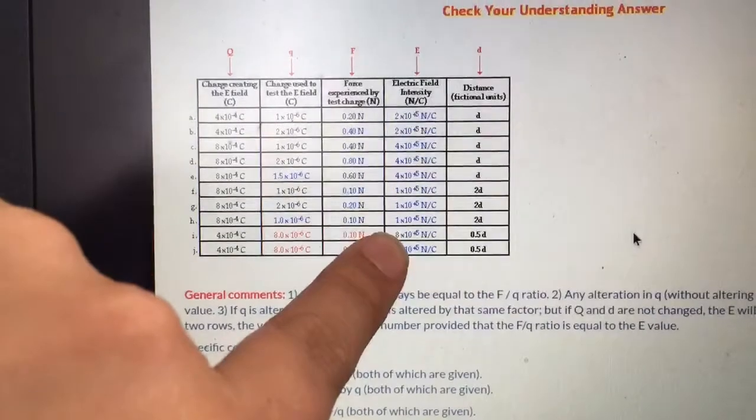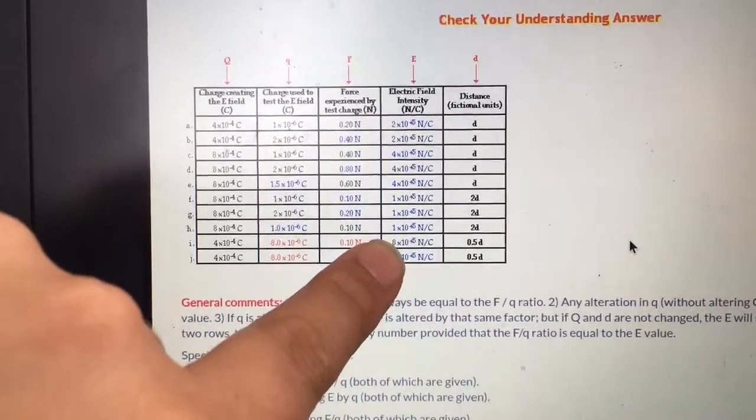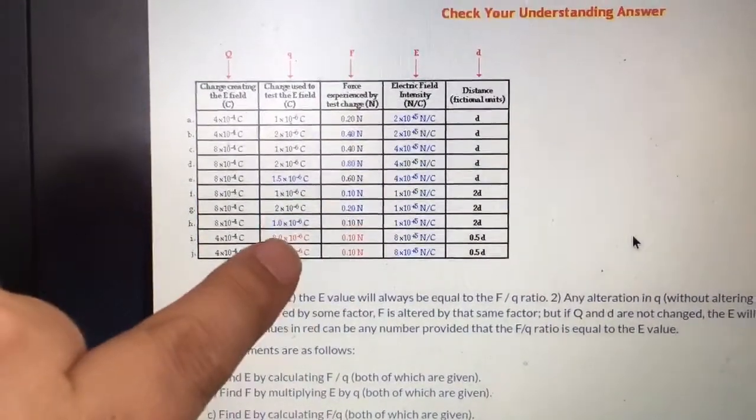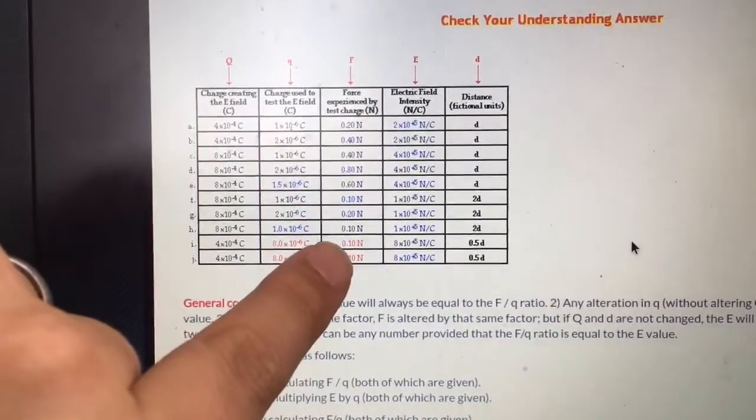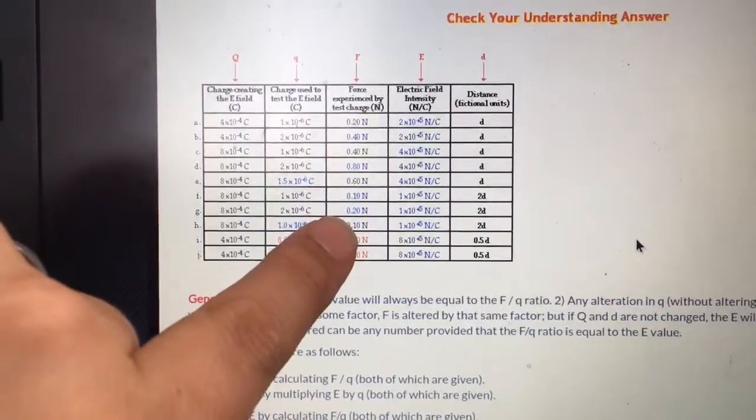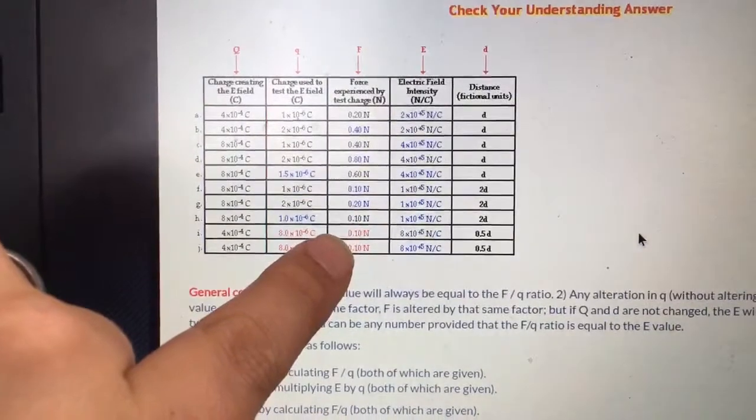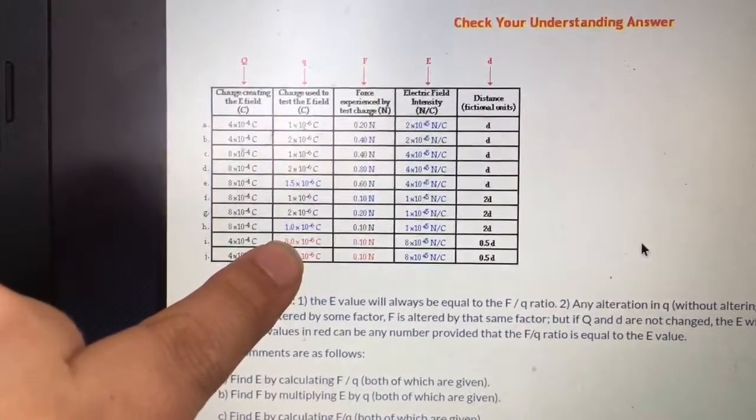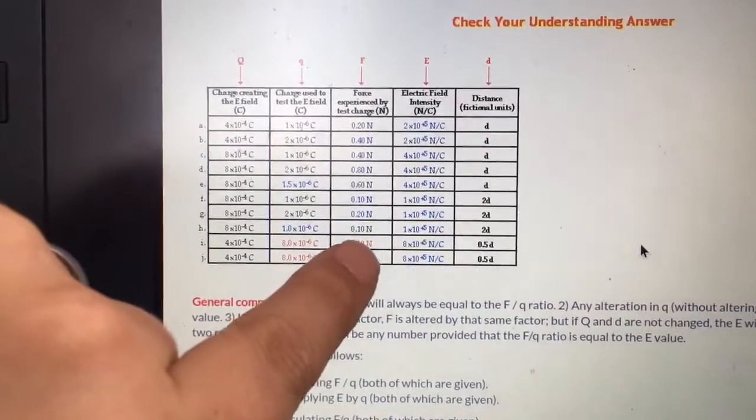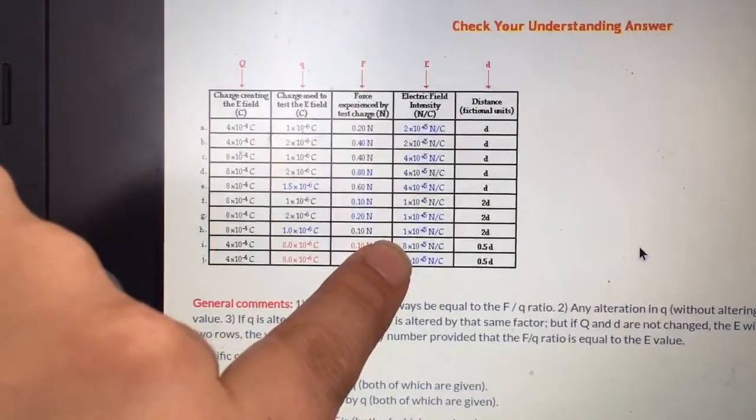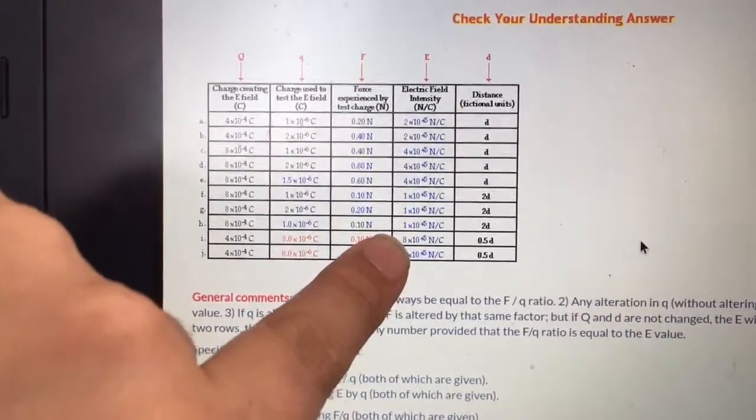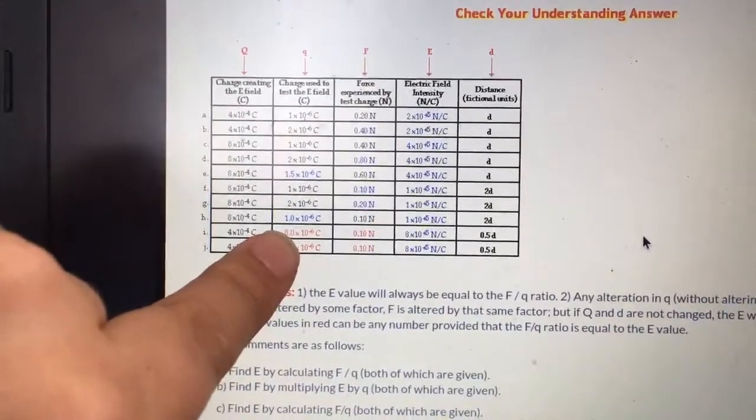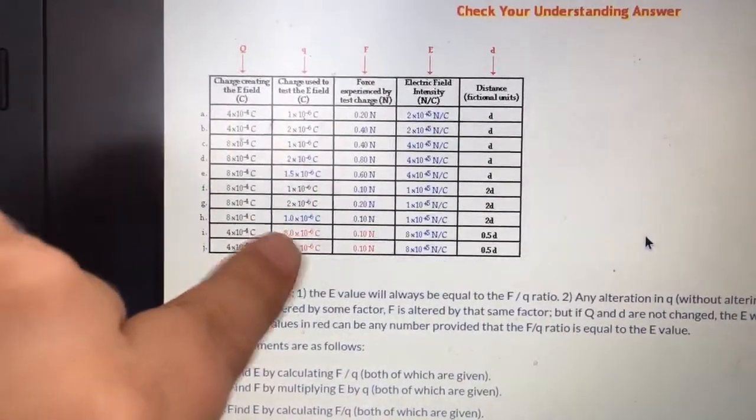For instance, if the value is 8 times 10 to the positive 5, we could substitute in anything here that would work. I've taken a force from this one above and used it again. The number I'd have to have here for the test charge would be something that gets me this electric field intensity. What number could I plug into the equation to get that 8 times 10 to the minus 6? But I could have chosen something else.